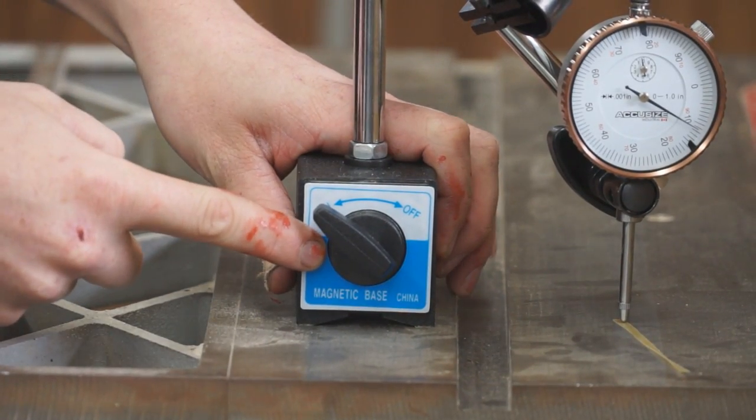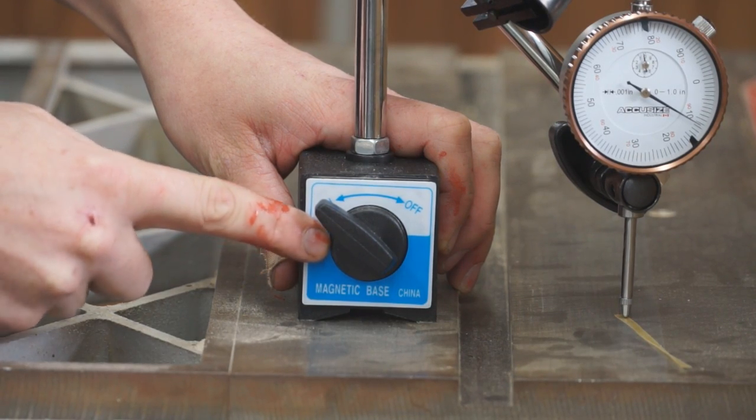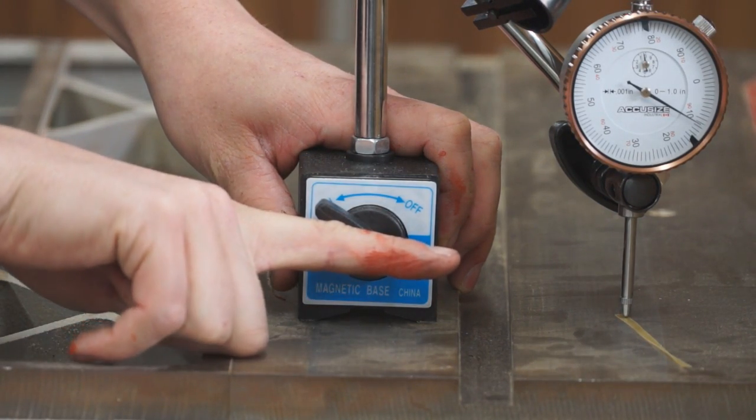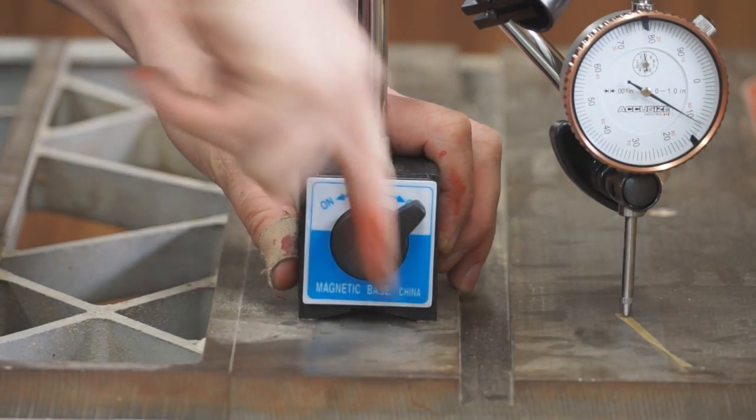Behind this switch is a cylindrical magnet. Right now, the north and south poles of the magnet are pointing this way. When I turn the switch to off, they turn 90 degrees to point up and down.